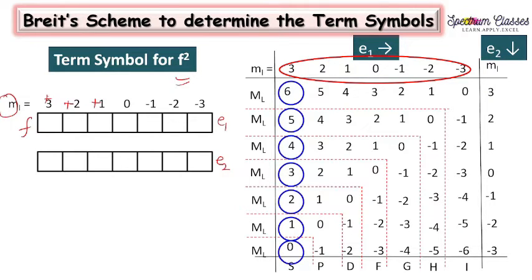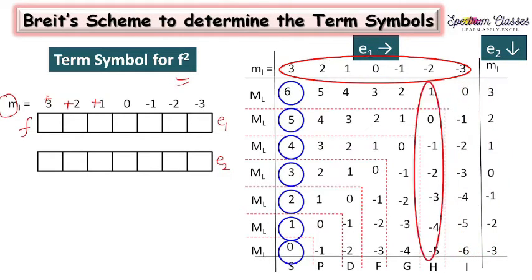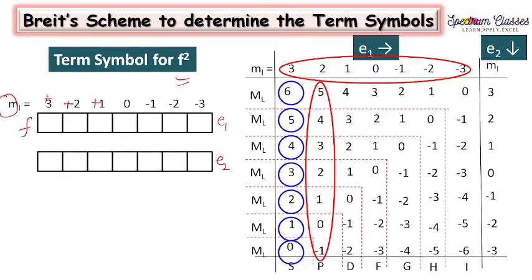Similarly, we move to the second column where the row element is 2, and we add all elements of the column to it: 2 + 3 gives 5, 2 + 2 gives 4, and so on. We do the same exercise for all other elements of the row and column to get the whole table of ML values formulated.